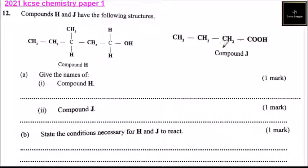This is compound J, still made up of carbon, hydrogen, and oxygen. So we give the names of compound H.